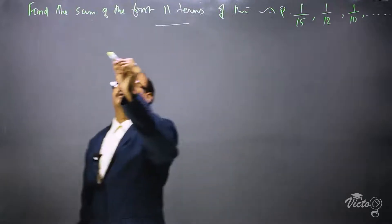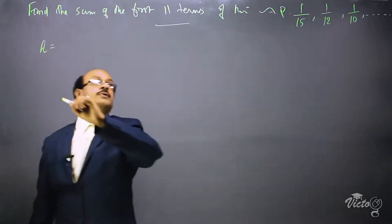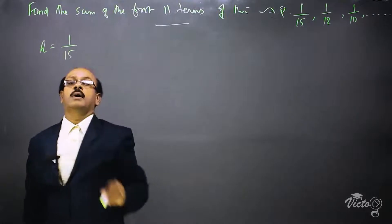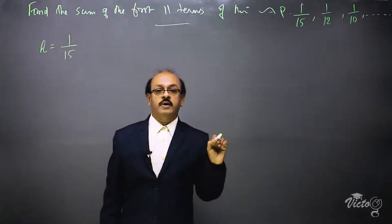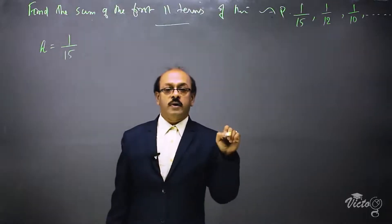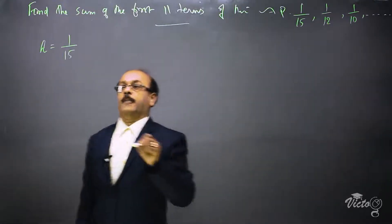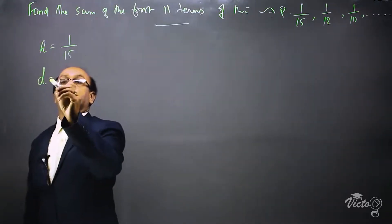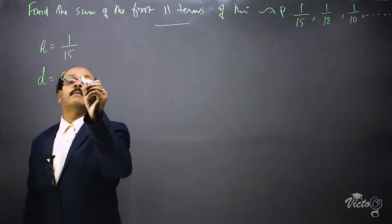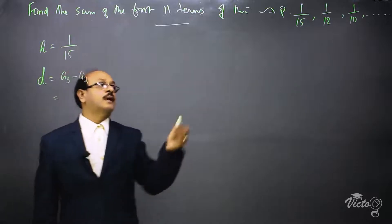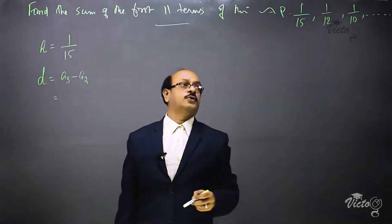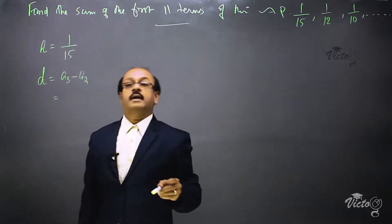The first term a is equal to 1/15. Now we have to find out the common difference properly. Don't make a mistake when finding the common difference because it involves fractions. We can take a3 minus a2 — since there are smaller numbers on a3 and a2 — so 1/10.